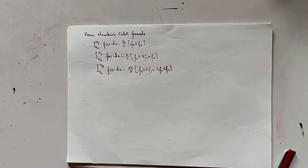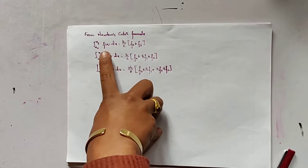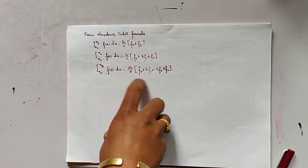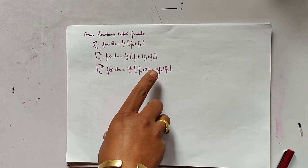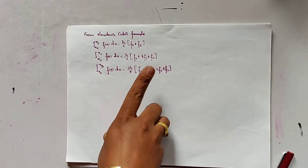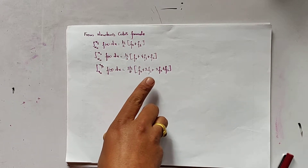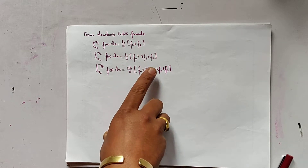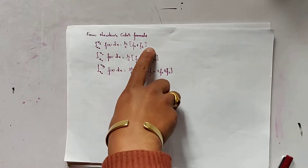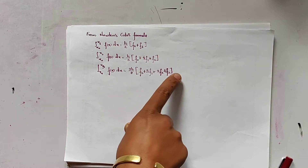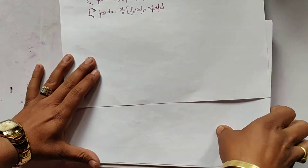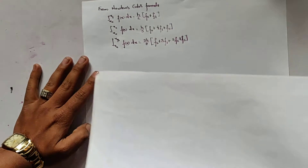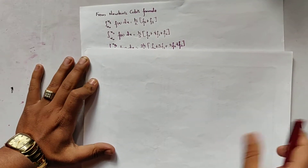Namaste. In this video we are going to use the Newton-Cotes formulas which we derived in the previous video to find the integration of functions. These are the three formulas where n equals 1, n equals 2, and n equals 3.